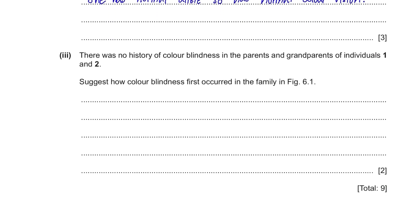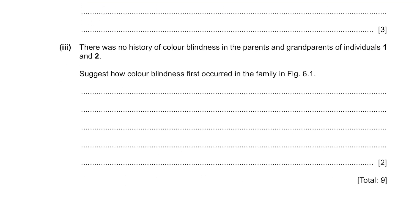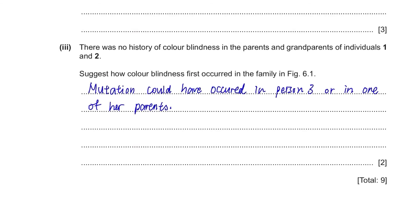There was no history of colour blindness in the parents and grandparents of individuals 1 and 2. How did colour blindness first occur in this family? Mutation could have occurred in person 3 or in one of her parents — even without the gene initially, mutation could have produced the recessive allele, which was then passed on to the children.